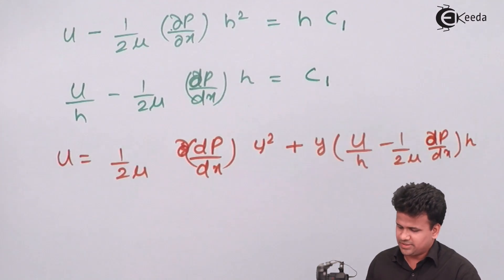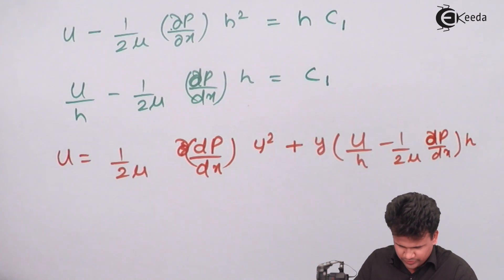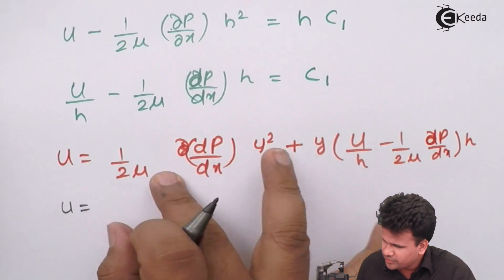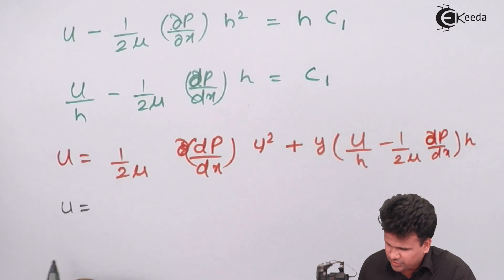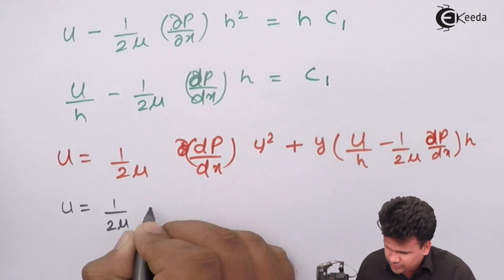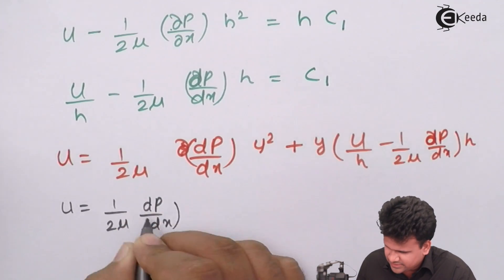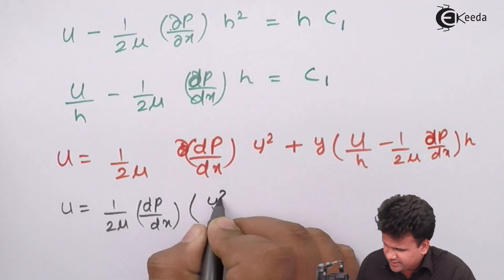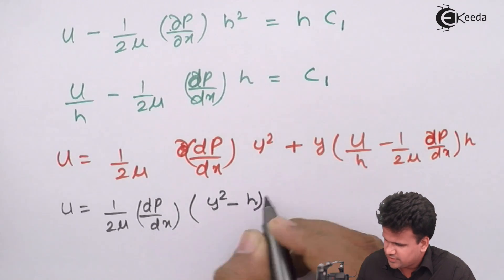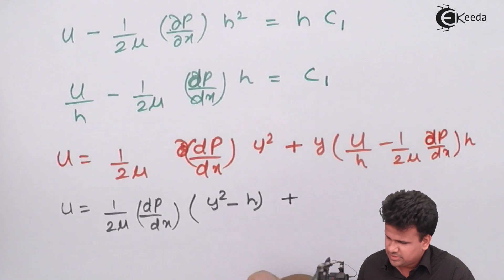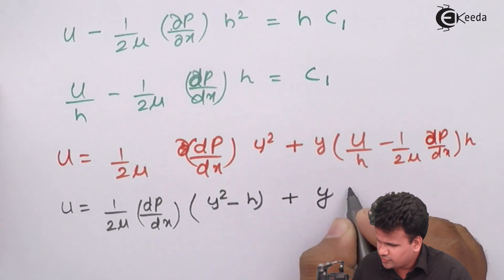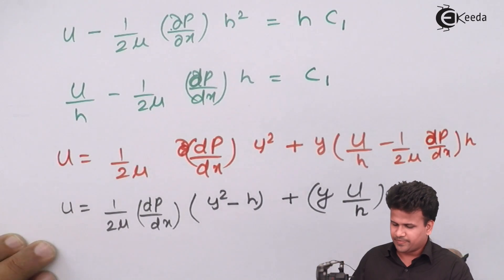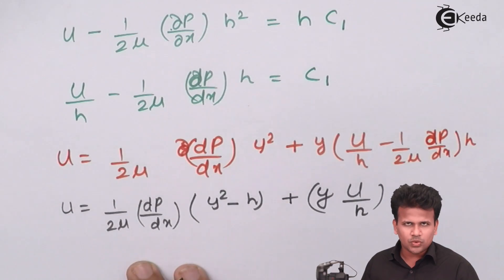Substituting the value of c₁ back into the equation and taking (1/2μ)(dp/dx) common from the relevant terms, the final solution for Couette flow becomes: u = (1/2μ)(dp/dx)·(y² − h·y) + y·(U/h). This is the complete solution for Couette flow.